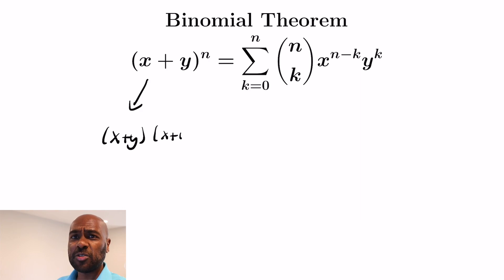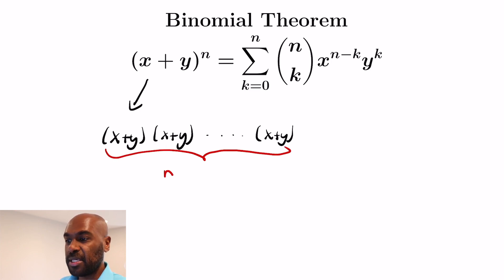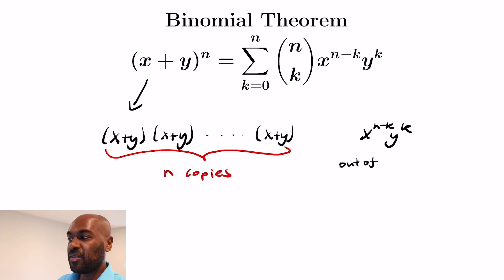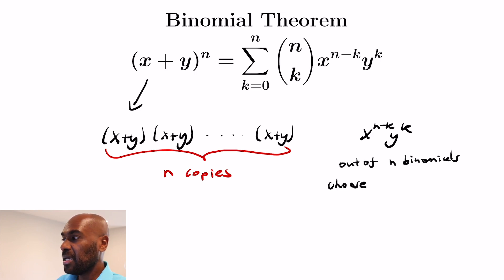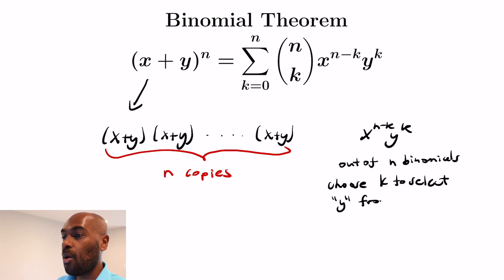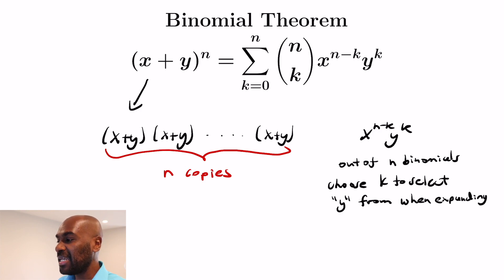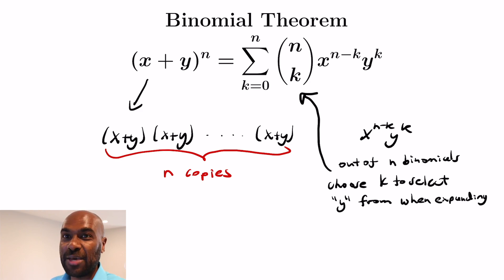Now let's see why. Typically this is proven using mathematical induction, but I want to give a proof that's more combinatorial. On the left hand side we have n copies of the binomial x plus y and we're asking what the expansion is. Looking at the x to the n minus k, y to the k term: out of the n binomials on the left side, we need to select from each one an x or a y. The x to the n minus k, y to the k coefficient is the number of ways we choose k of these to be a y and n minus k of them an x. We have n choices and we're choosing k of them to be y, so there are n choose k ways to do this — a nice compact reason for why this theorem holds.